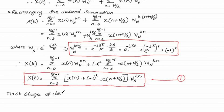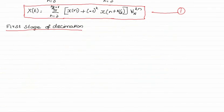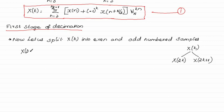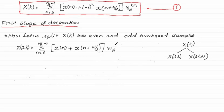First stage of decimation. Now let us split X of K into even and odd numbered samples, that is X of 2k and X of 2k plus 1. In equation number 1, let us substitute K equal to 2k.